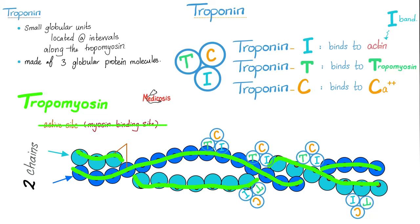Welcome another protein — it's called troponin. Troponin has three globular protein molecules found at intervals on top of the actin: troponin I, troponin T, and troponin C. Troponin I binds to actin — the I stands for isotropic, and actin was the I band. Troponin T binds to tropomyosin. And troponin C binds calcium.